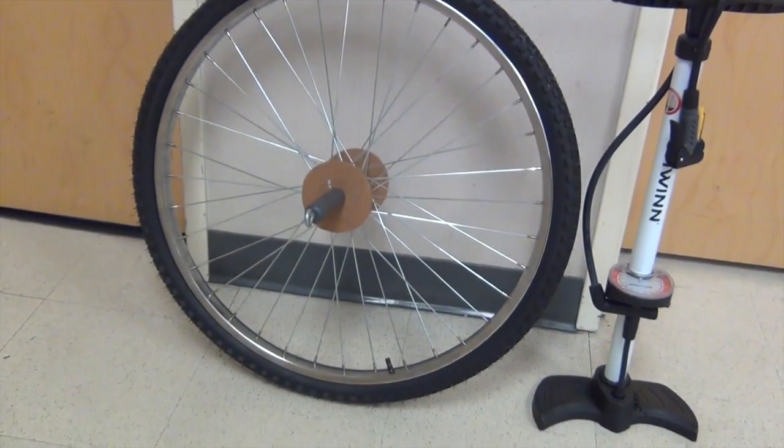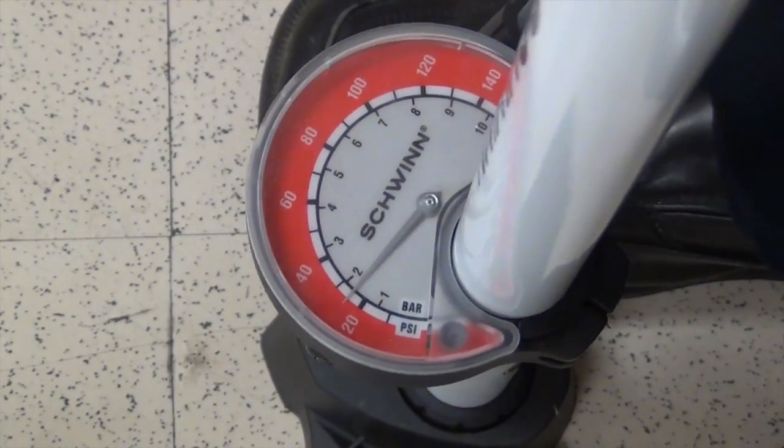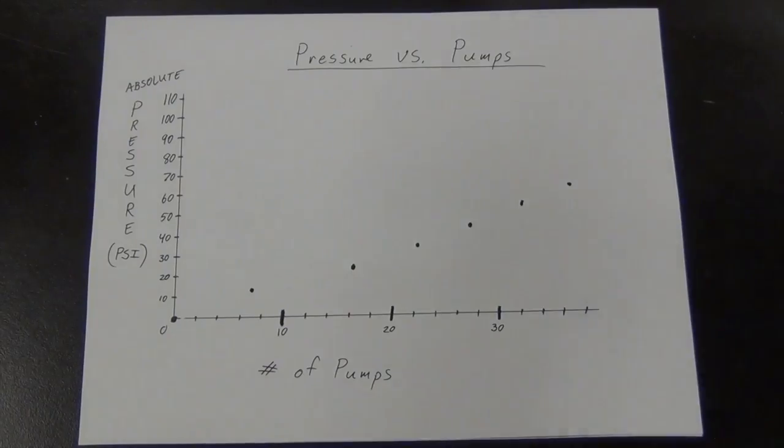Check it out. It's time to pump up my bike tire. Every time I do, the pressure goes up, up, up. So we can expect a linear relationship between the number of pumps and the pressure, and that's what we get.